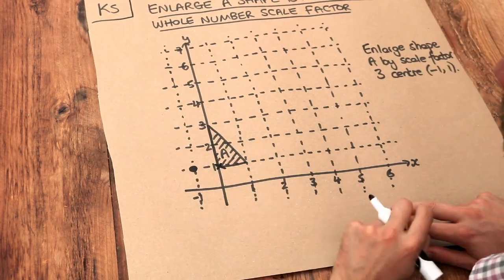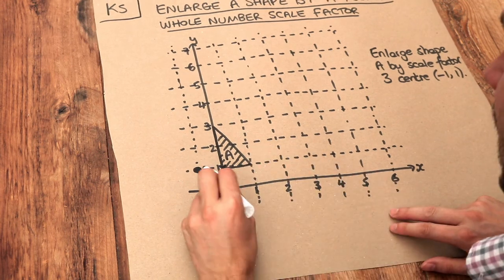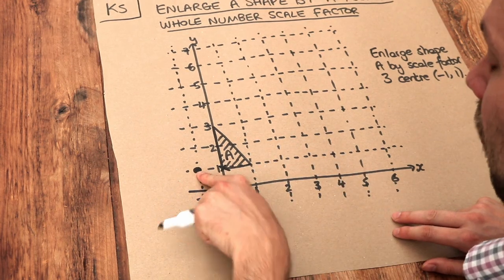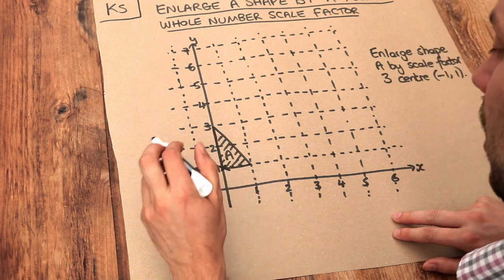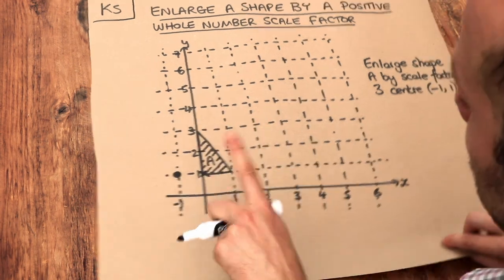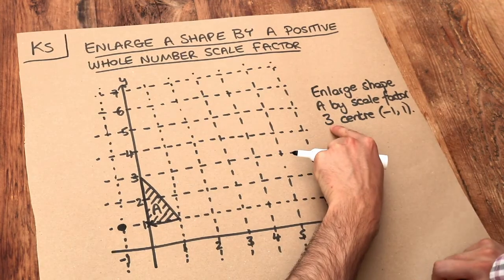So let's just take one point on this shape and all we need to do is count the movement from the centre of enlargement in terms of the squares right and the squares up, and then what we're going to do is multiply each of those counts by the scale factor of three.